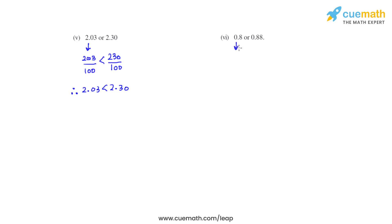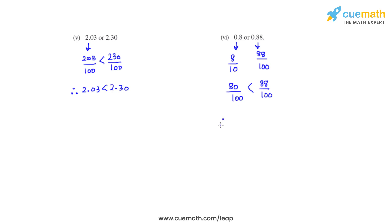Coming to the last bit, we have 0.8 and 0.88. The equivalent fraction of 0.8 is 8 over 10, and the equivalent fraction of 0.88 is 88 over 100. We make the denominator of 8 over 10 equal to 100 by multiplying numerator and denominator by 10, giving us 80 over 100. Since 88 is greater than 80, we can say 80 over 100 is less than 88 over 100, therefore 0.8 is less than 0.88. This is how we solve this problem.